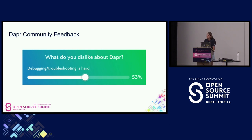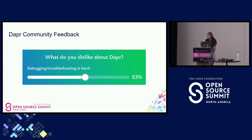However, 53% of our users say that debugging and troubleshooting is really hard with Dapper. Dapper offers 10 APIs with eight SDKs supported and over 120 different component types. This leads to a really awesome open source project enabling developers in distributed systems. However, there is that large surface area to cover, and only a set number of maintainers and hours in the day. So yes, sometimes it is hard to debug and troubleshoot.